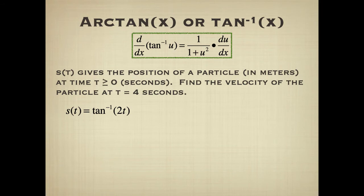Next one we have is arc tangent or tangent inverse x, depending on how it's written. So s of t gives the position of a particle in meters at time t greater than or equal to 0 seconds. Find the velocity of the particle at t equals 4 seconds. So we want to find the velocity, and the velocity requires us to take the derivative because velocity function is a derivative of the position function.